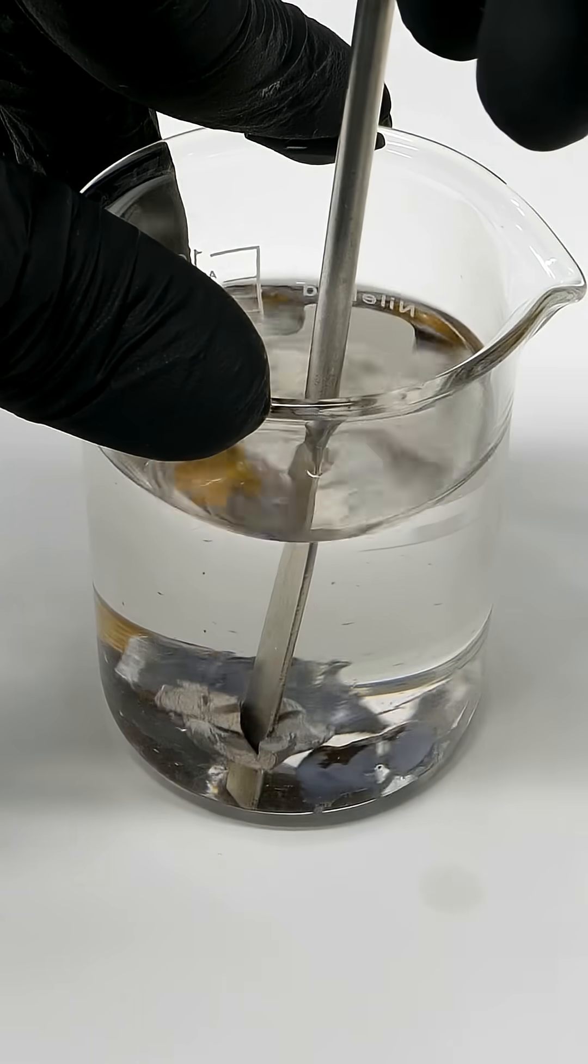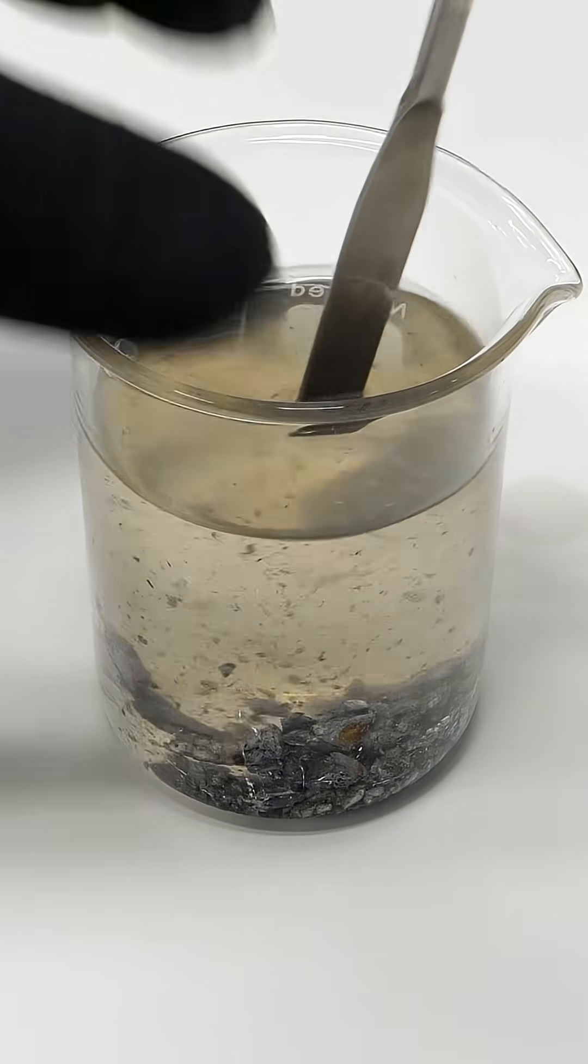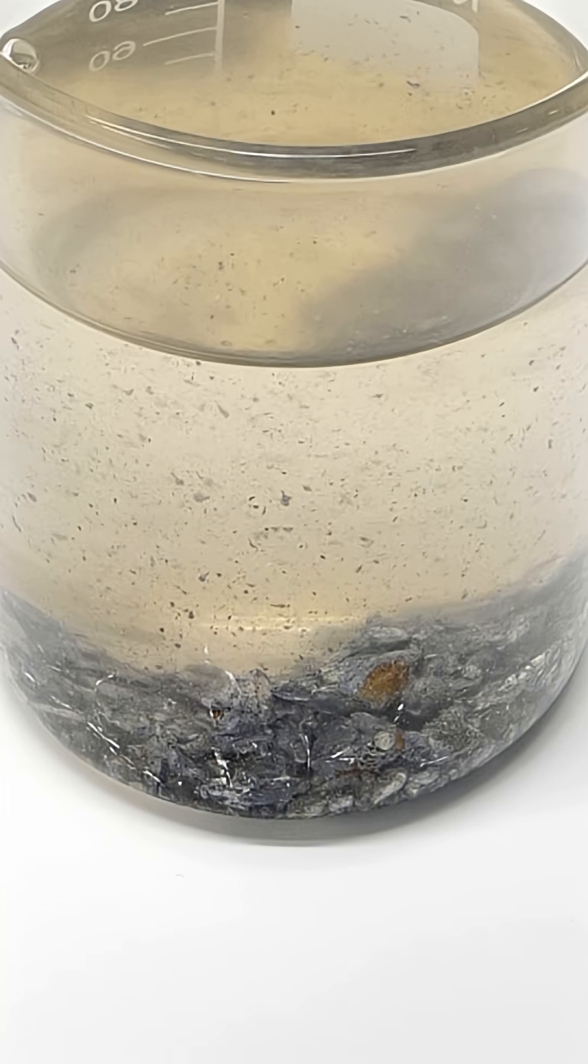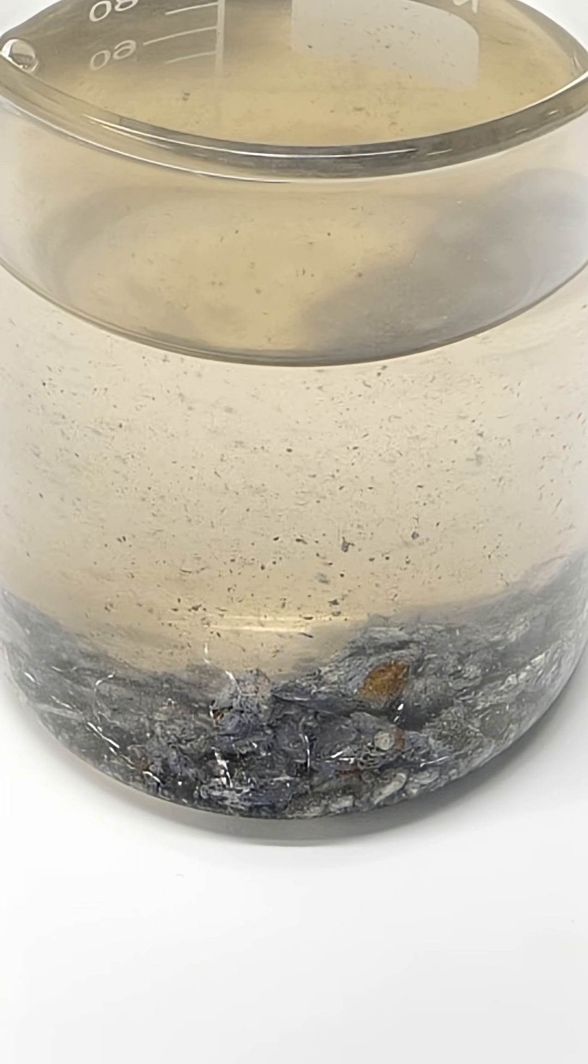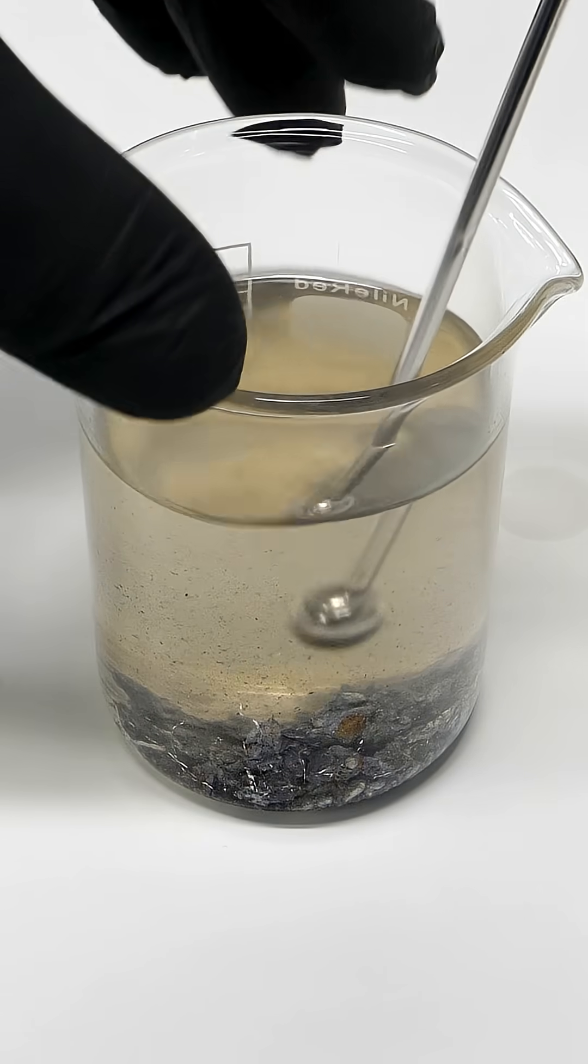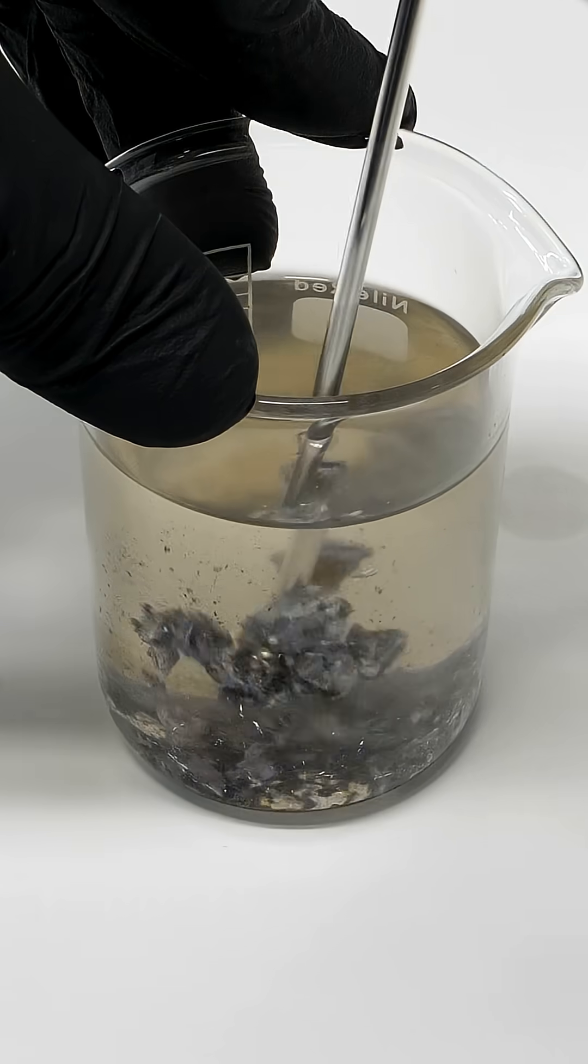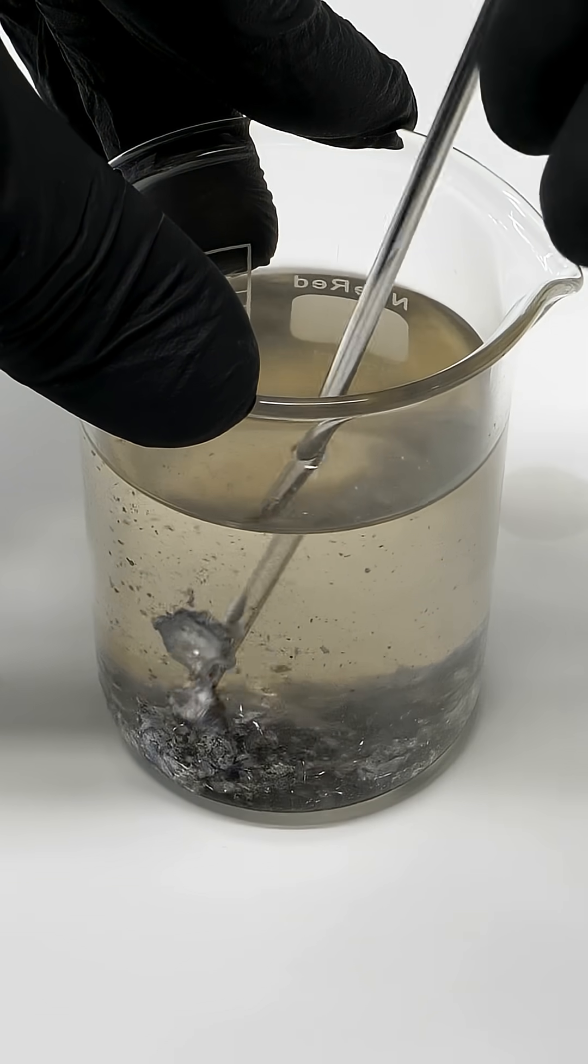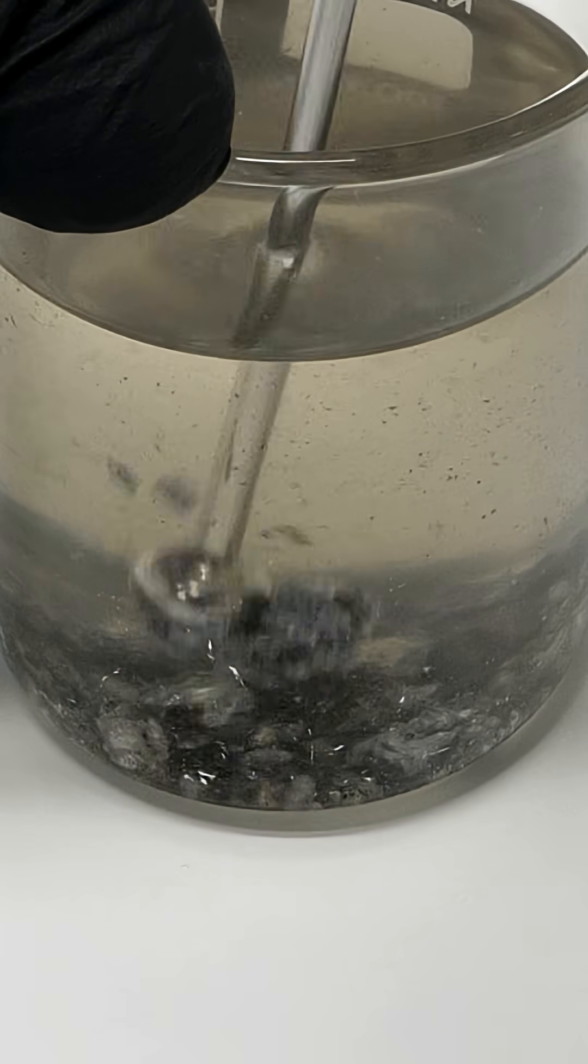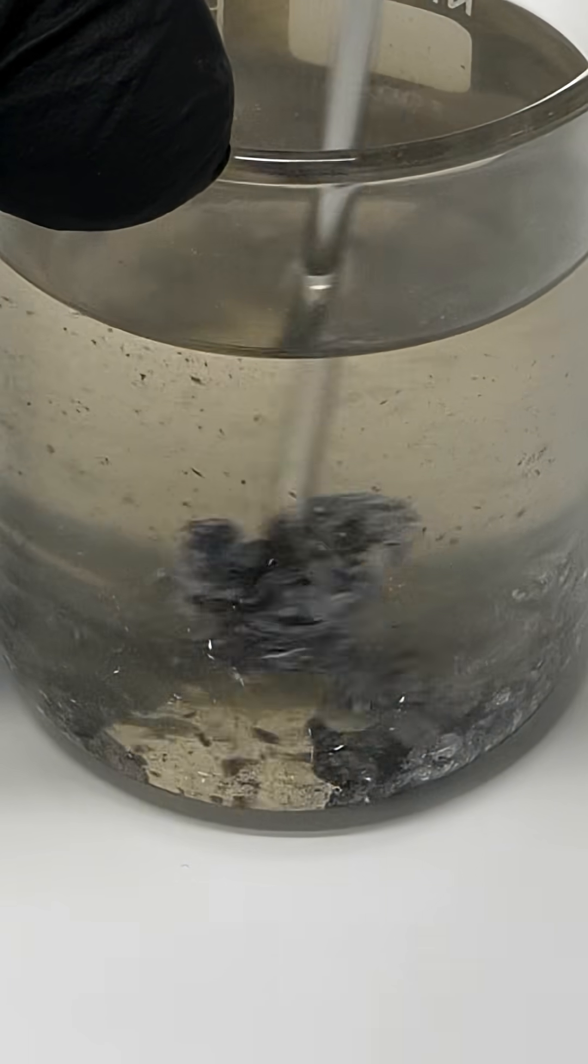It took a few minutes of stabbing, but I was eventually able to break them into a bunch of small pieces. At this point, it just looks like a pile of junk, but this should change when I start squishing it. Using this other tool, I can squeeze the pieces together and hopefully force the sodium and potassium to combine. This should make a sodium and potassium alloy, also known as NAK, which is a super reactive liquid.